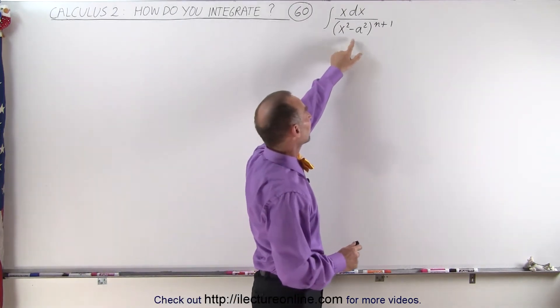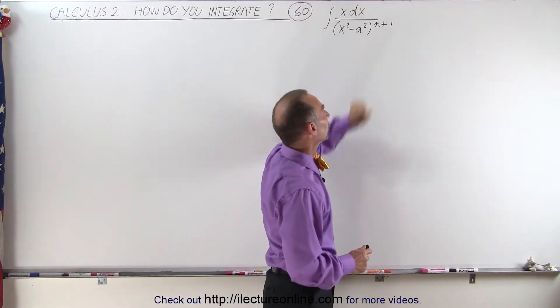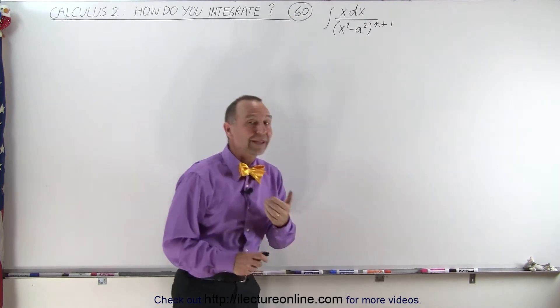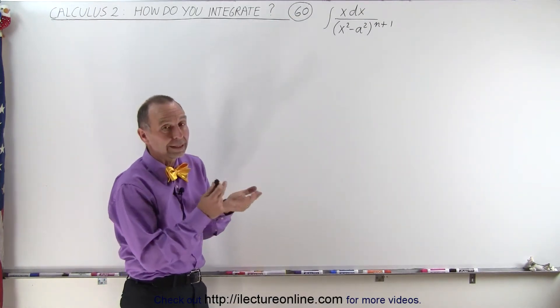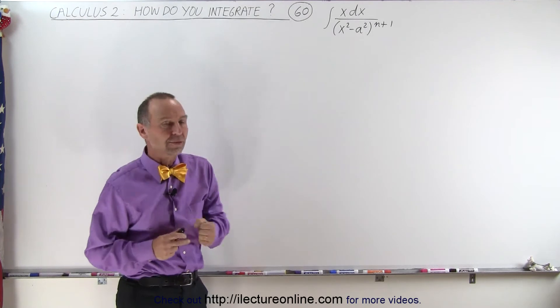We have the denominator x squared minus a squared raised to the n plus 1 power. Now, if n is equal to 0, so simply to the 1 power, then it becomes exactly like the previous video.